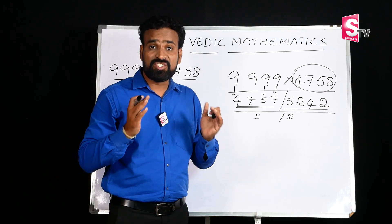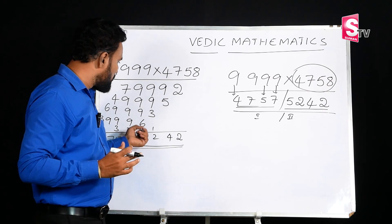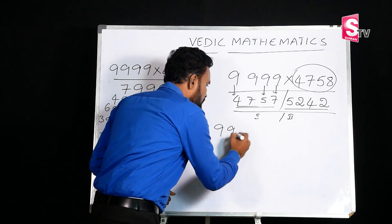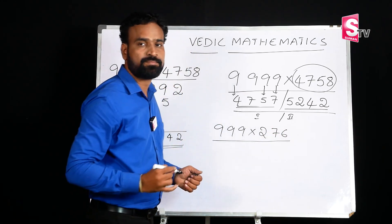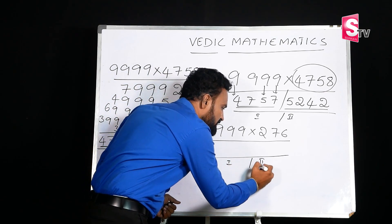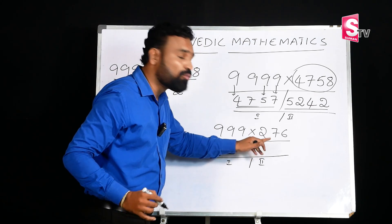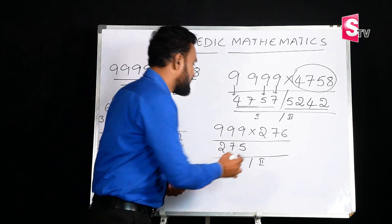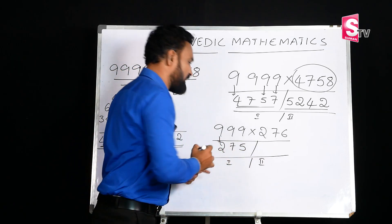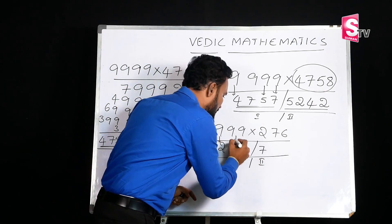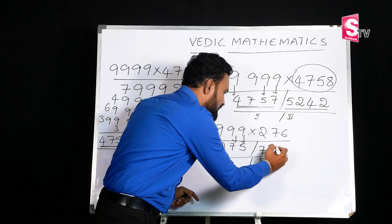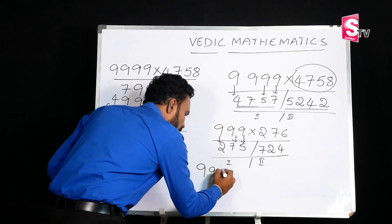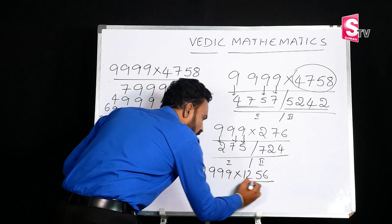Vedic Mathematics saves a lot of time and reduces mistakes. Let's take another example: 999 into 276. The answer has two parts. First part: 276 minus 1 equals 275. Second part: subtract each digit from 9 — 9 minus 2 is 7, 9 minus 7 is 2, 9 minus 6 is 4. So the second part is 724. The final answer is 275724. Practice problem: 999 into 1256 — write your answer in the comment section.